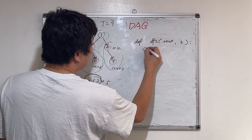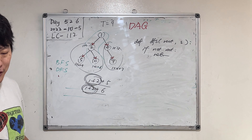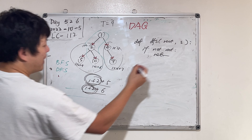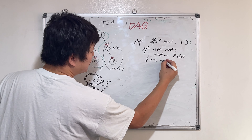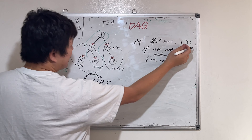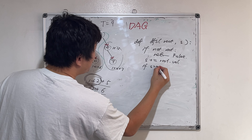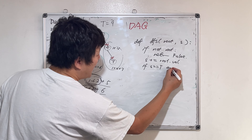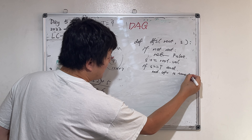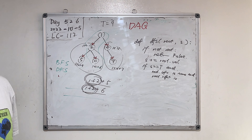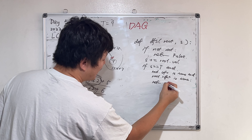If root is empty we return false. Otherwise, s plus equals root value — we add the value, accumulating: we added 1, then 1+2. Then we check if s equals T, but we also have to check if the node is a leaf node — check if root.left is None and root.right is None. If accumulated sum equals target and this is a leaf node, we return true.